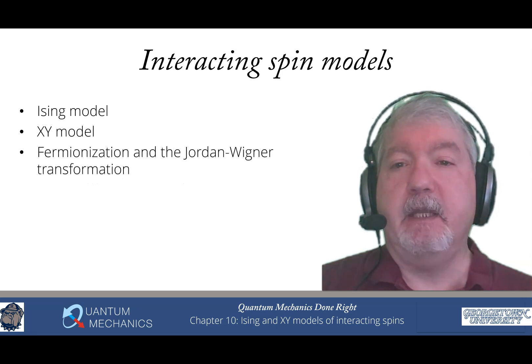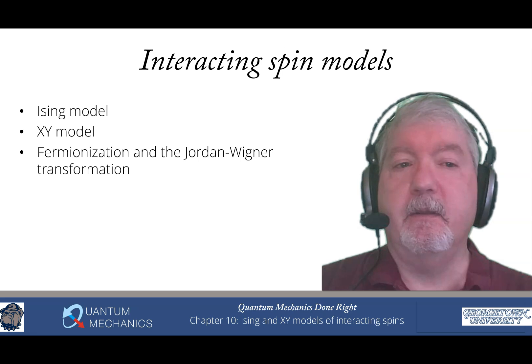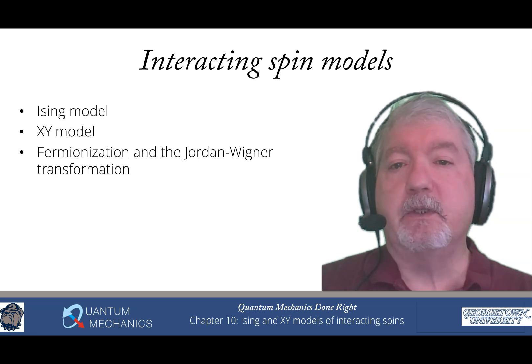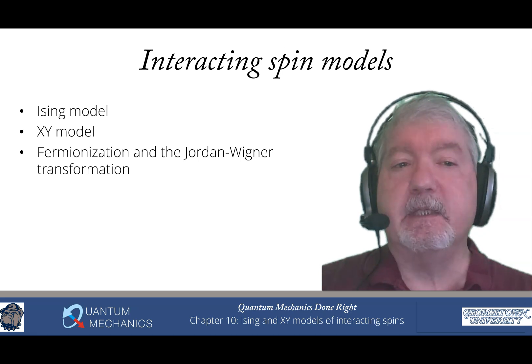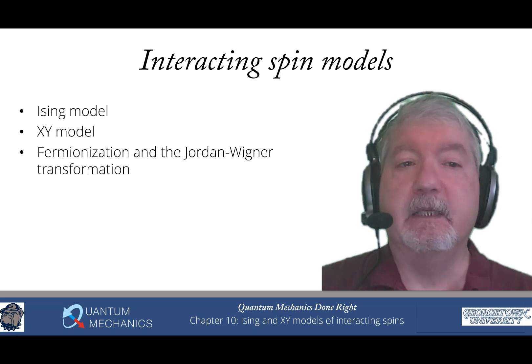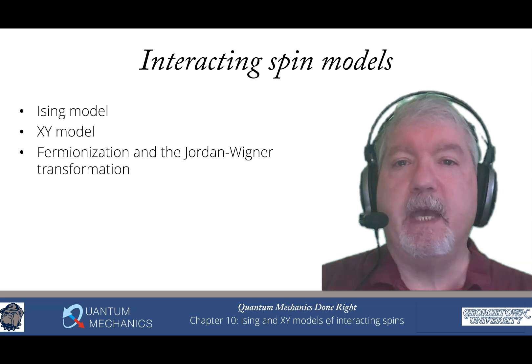We then look at a really important approach using what's called the Jordan-Wigner transformation and fermionization that allows us to solve these problems exactly. In essence, what we do is we map the spin onto non-interacting fermions. By working with the fermions, we can exactly solve the spin problems. This also provides an opportunity to introduce you to second quantization and fermionic operators, which we will be using later in the book as well.